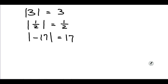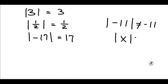If I were to say the absolute value of negative 11 equals negative 11, that would be false, because absolute value of something can never equal a negative number. Or if I were to say the absolute value of x equals negative seven, then the solution of that equation is the empty set, because it can never, ever happen. The absolute value of some number will never be negative seven.